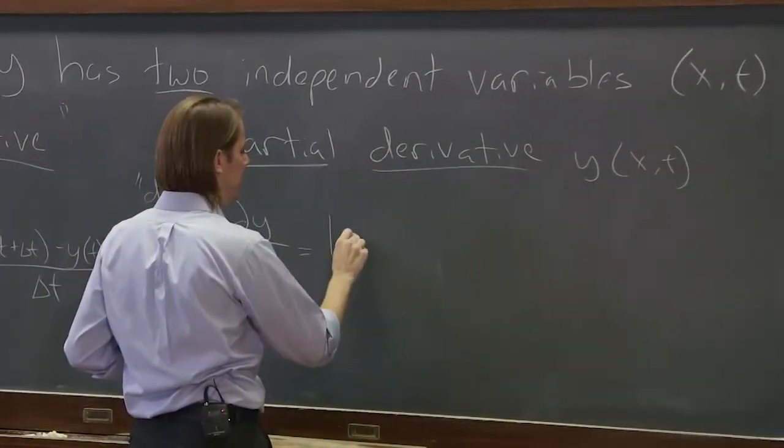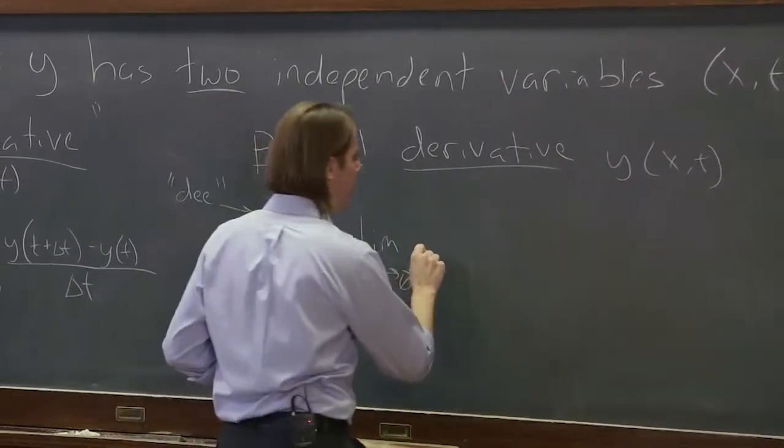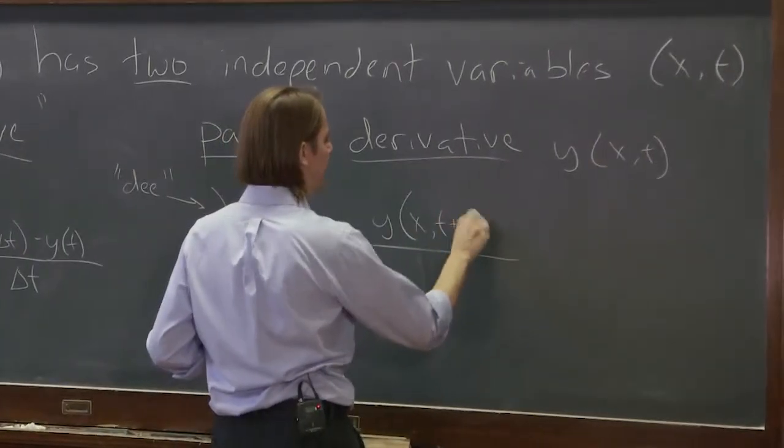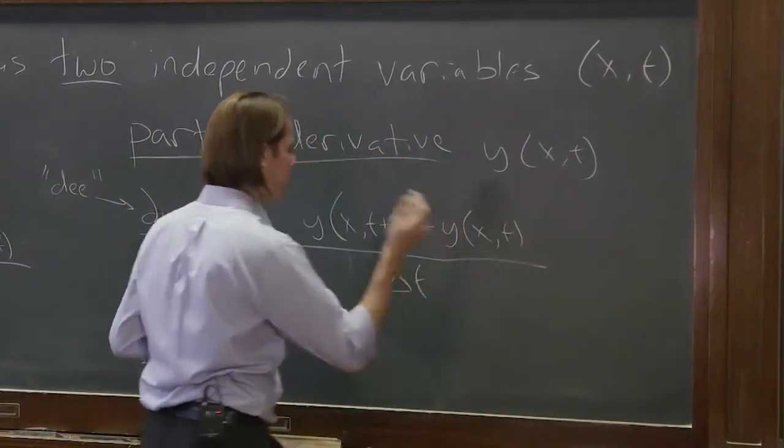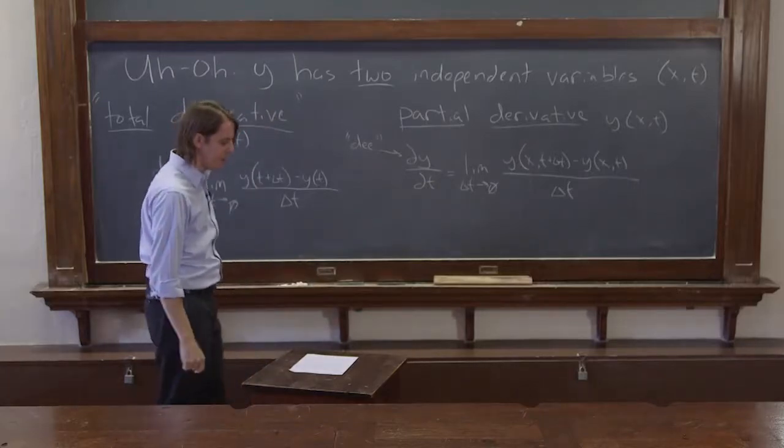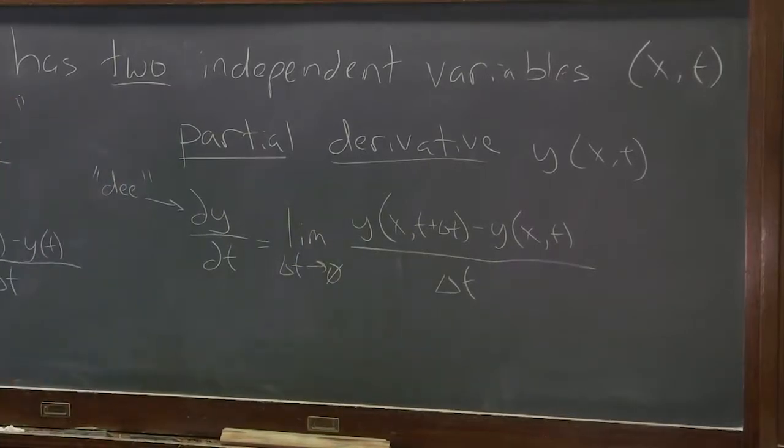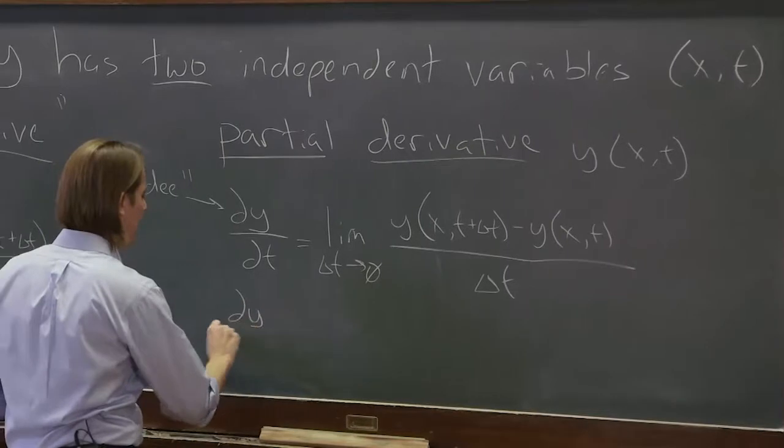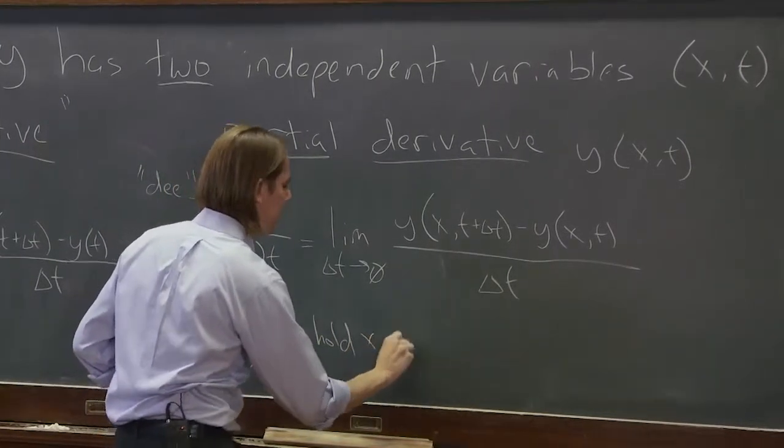It is also the limit as delta t approaches 0 of y of x at t plus delta t minus y x t over delta t. That's it. Basically, to take a partial derivative, all you do is hold the x constant. Treat the x like a constant, take the derivative with respect to t. So ∂y/∂t, hold x constant.